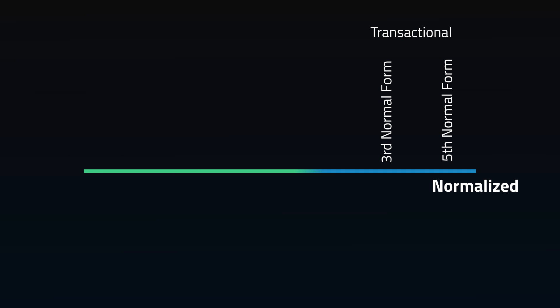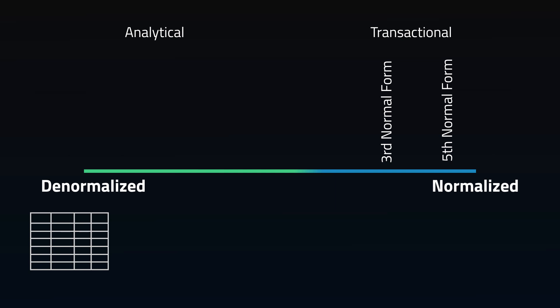On the left end, where there's no normal forms applied, this is called a denormalized structure. Analytical systems prefer denormalized databases because they're optimized for human reading, which is who is doing the bulk of analysis. These are going to have much wider tables where the data is clearly spelled out.